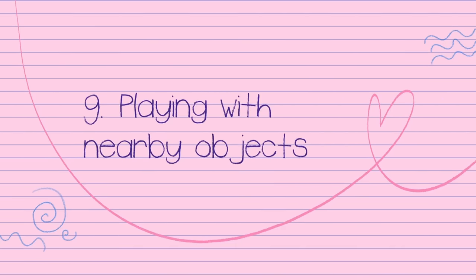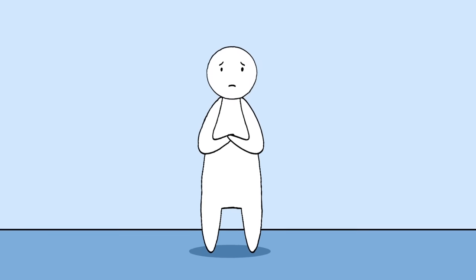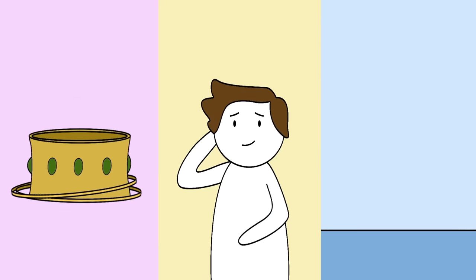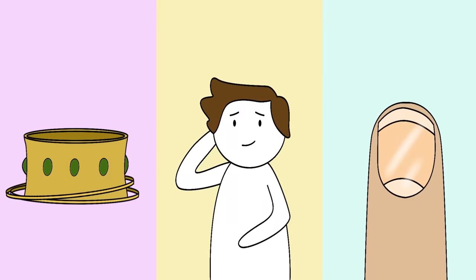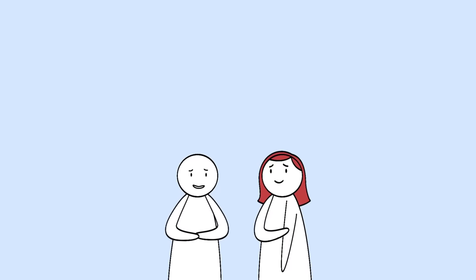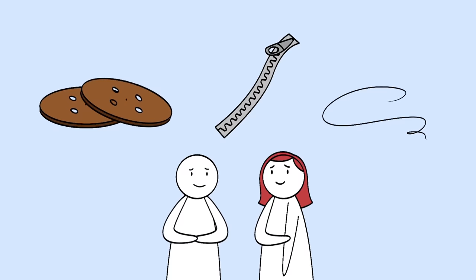9. Playing with nearby objects. When some people get nervous, they fidget. They might play with their hair, their bracelets, or their nails. But according to a recent study, those same behaviors might be linked with attraction. Researchers found that people who were flirting often found themselves playing with buttons on their shirts, zippers, strings, and many other nearby objects.